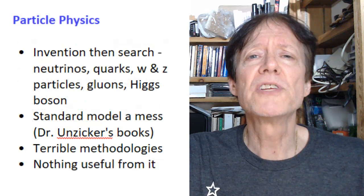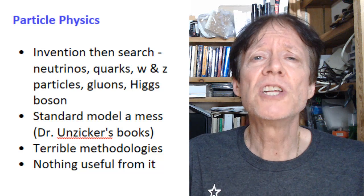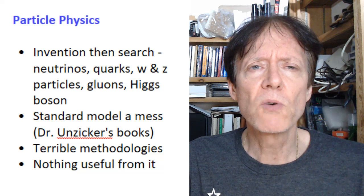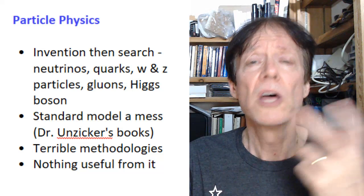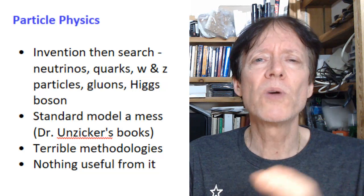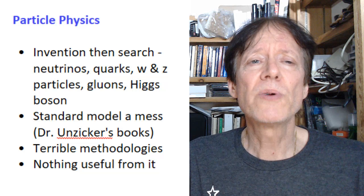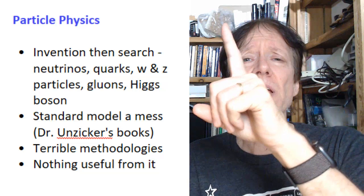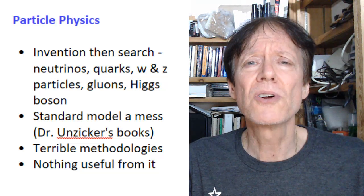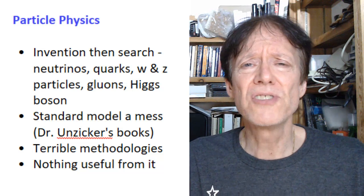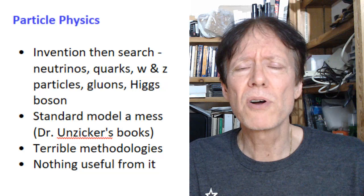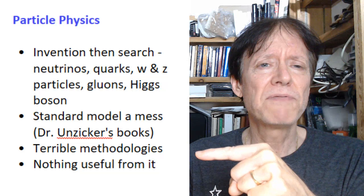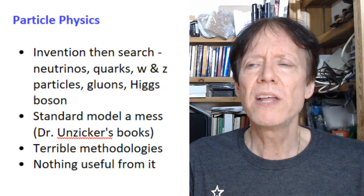What's next? Particle physics. Particle physics, what I say is an invention-then-search. Starting in the 1930s, we invented particles like the neutrino, then we invented quarks and W and Z particles, gluons, Higgs boson, many other particles. We invented them, said that they existed, and then we went and found them. Of course, that has created a standard model mess. If you haven't seen, I have three interviews with Dr. Alexander Unzicker. If you go to dissidentscience.com, click on recommendations, you'll see I have a book by him called The Higgs Fake. You must read it.